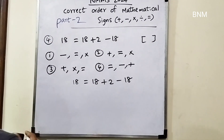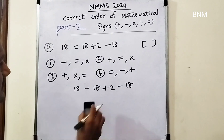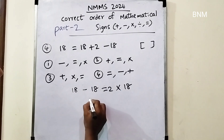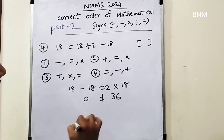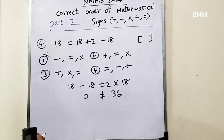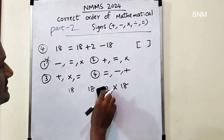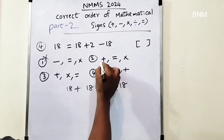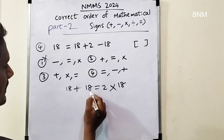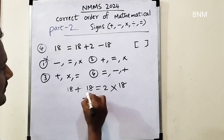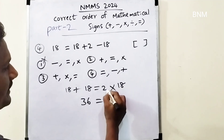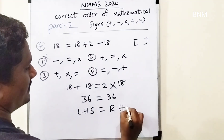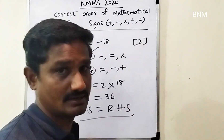The first option uses minus. Then equal to, then into. This minus is 0 — this is 26, this is not equal. First option is not equal. Next, the same symbols will be plus. Plus, equal to. 2 addition is 36; 18 plus 18 is 36; 18 plus 2 is 36. Left-hand side is equal to the right-hand side. Second answer is the right answer.